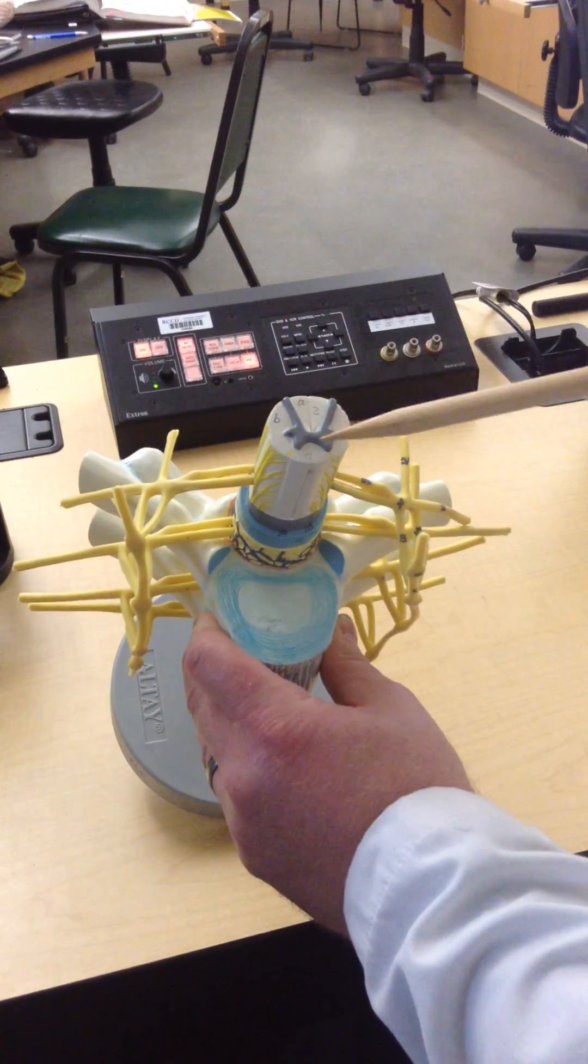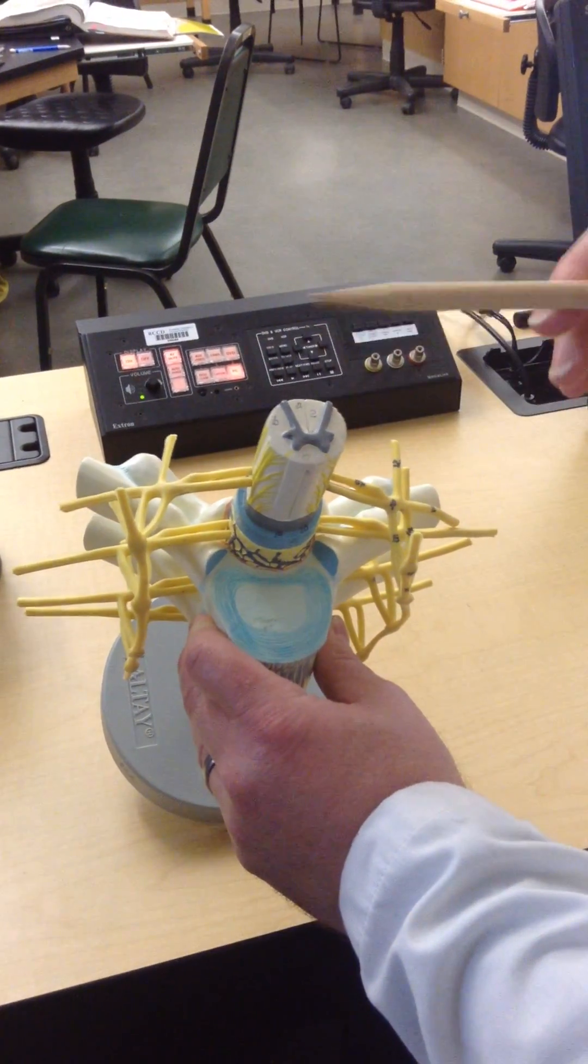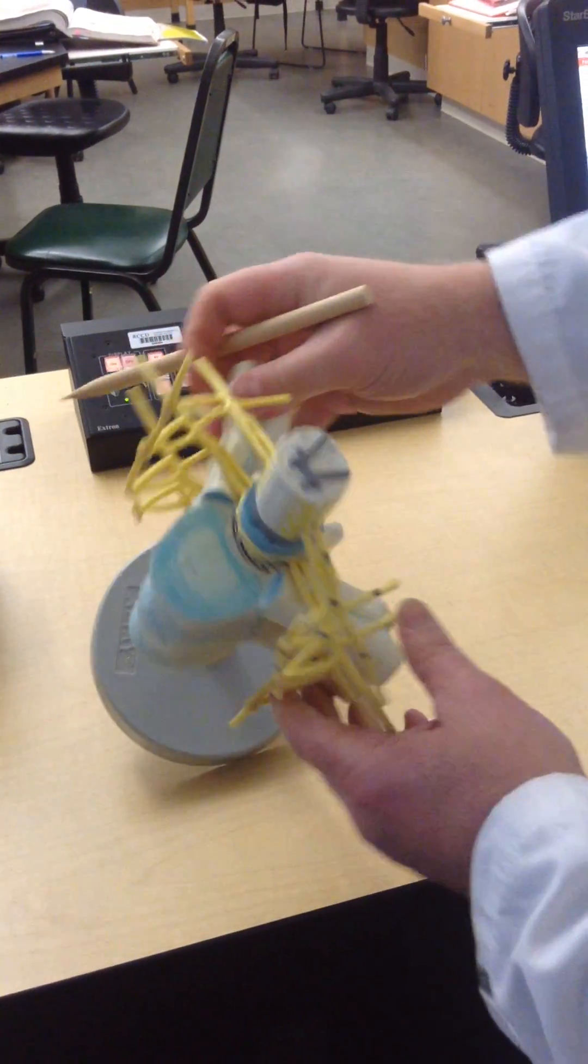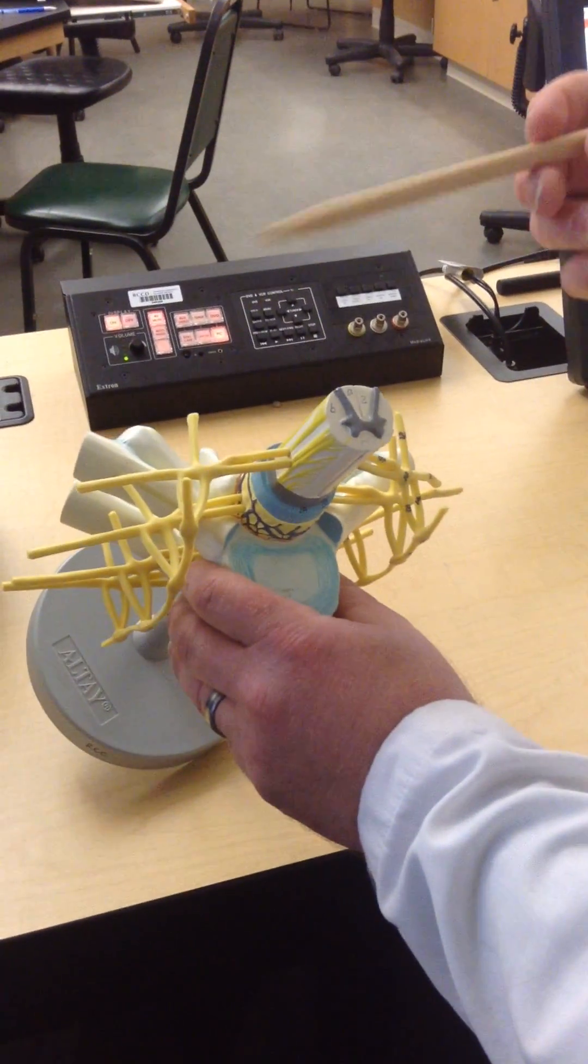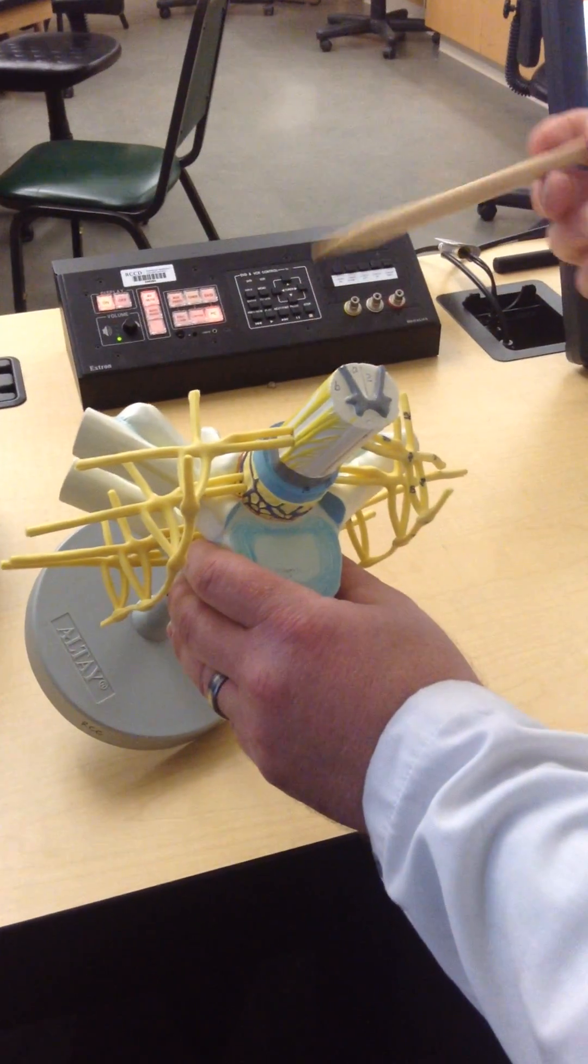This is the dorsal horn, and this is the ventral horn here and here. And so as we look at the structure and orient ourselves, there's going to be incoming and outgoing nerves.